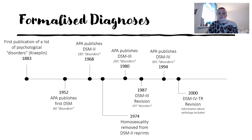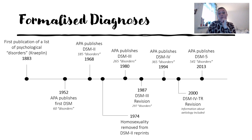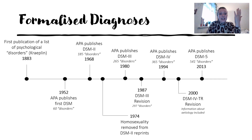A DSM-4 revision started to include information about etiology. The latest is DSM-5, and it's very difficult to find the exact number of disorders listed. Checking multiple sources, I found the number 541. So from the 1950s we've gone from 60 to nearly 541 disorders — nearly ten times what we had at the start.